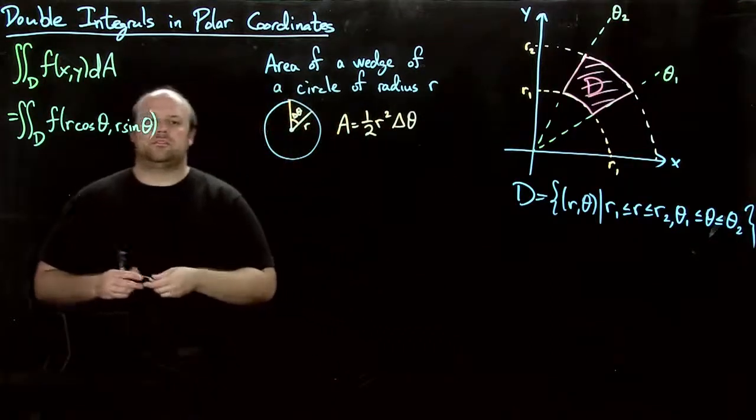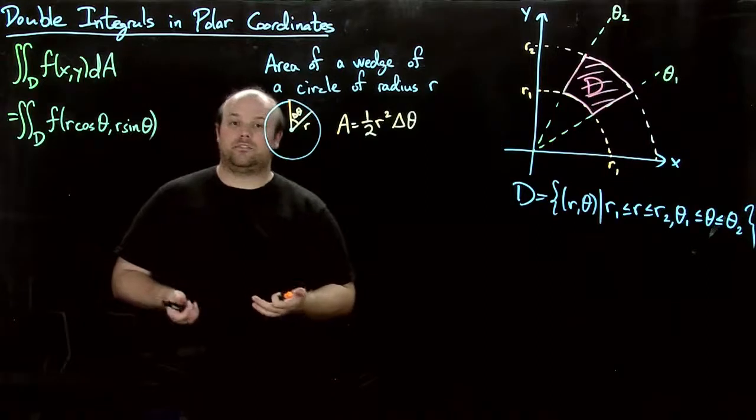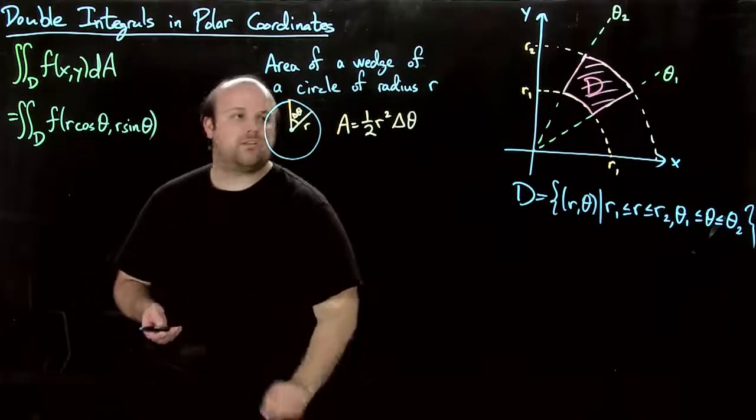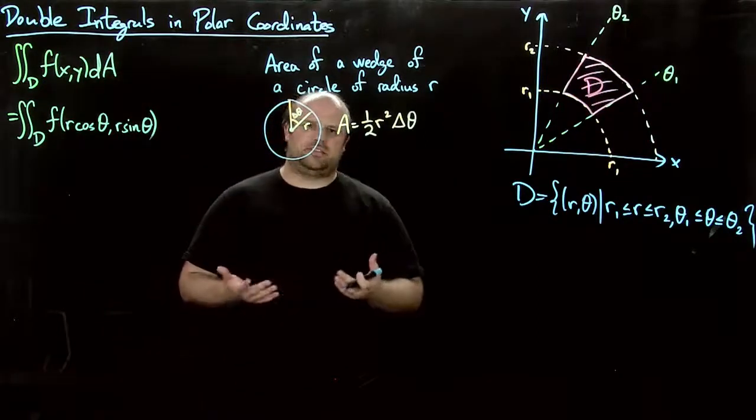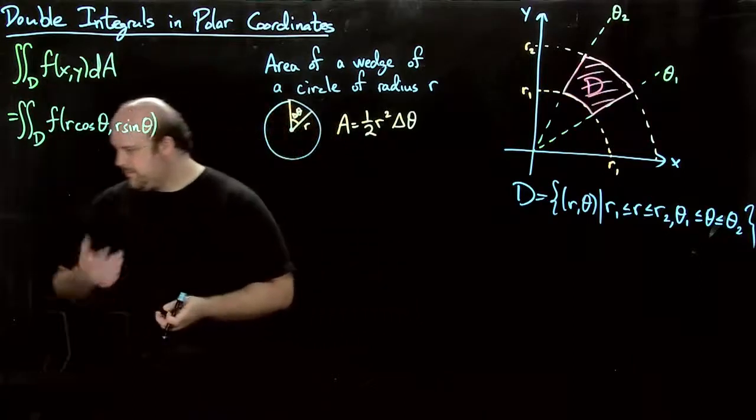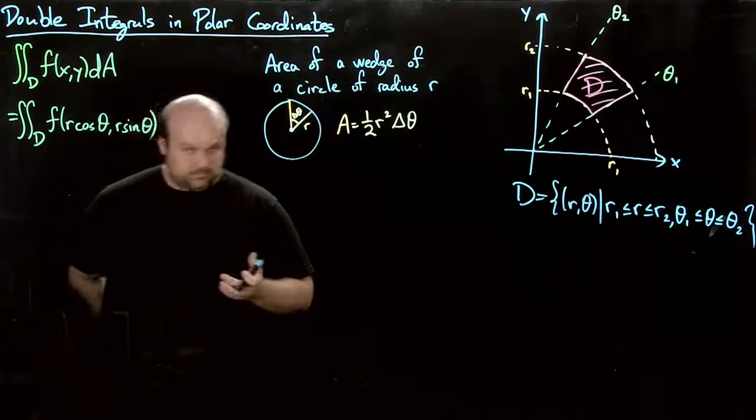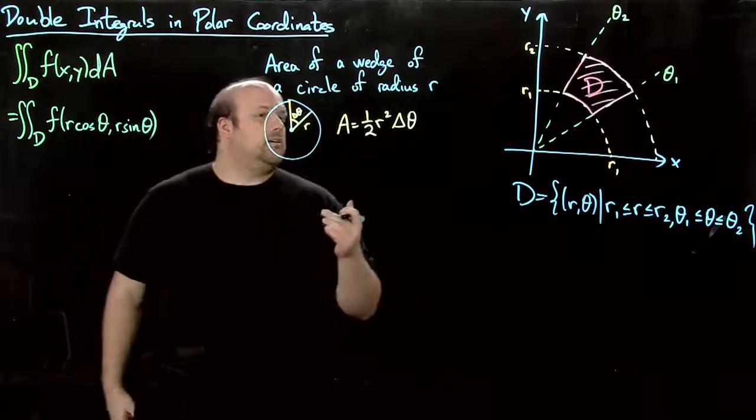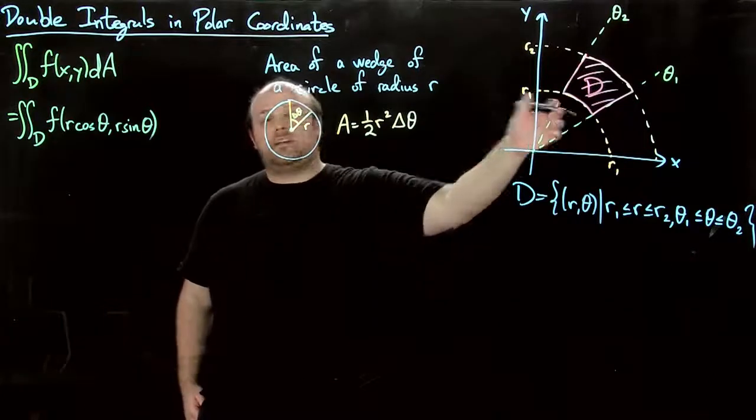So it kind of relates to pi r squared a little bit. So what do we do with this? What's the point of this? Well, let's write out, then, the area of d.